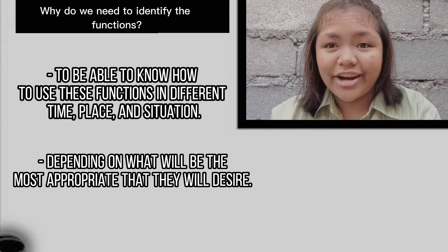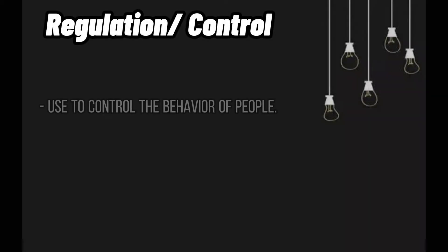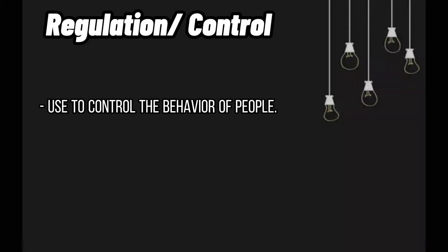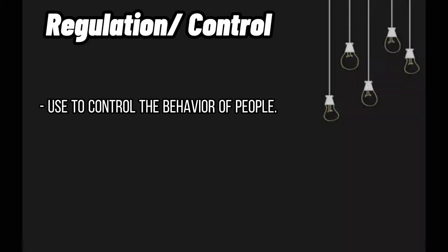Now we will be tackling the five functions of communication. Let's go to the first example: Regulation/Control. This function is used to control the behavior of people and to regulate the nature and amount of activities people engage in. Example: